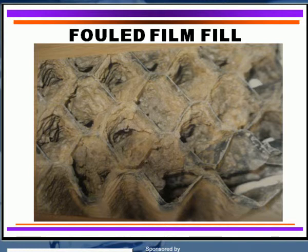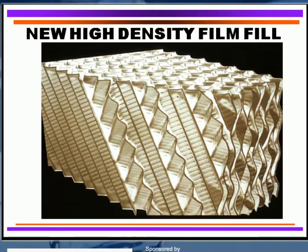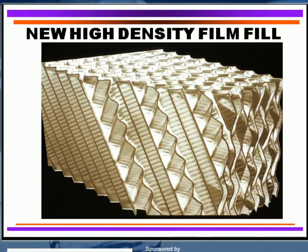Here's an example of high-density film fill — clean, brand new. It's usually one foot by one foot by four feet long, and when even damp but clean it will weigh about 20 pounds. We've actually had cooling towers where it weighed over 200 pounds due to accumulation of biomass, suspended solids, scale, and corrosion products. So you have to be careful — examine the fill, make sure you have a proper water treatment program, particularly the biocides, to keep it clean, even if you have to go in and clean it up manually.